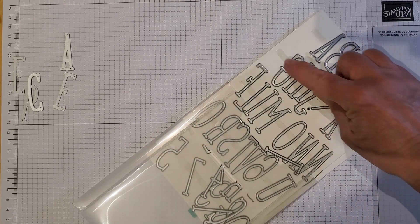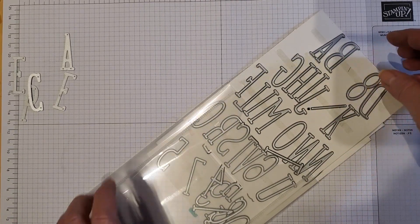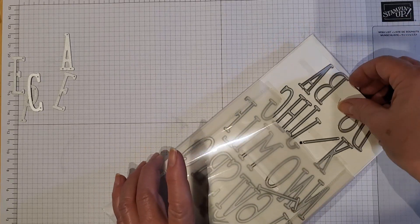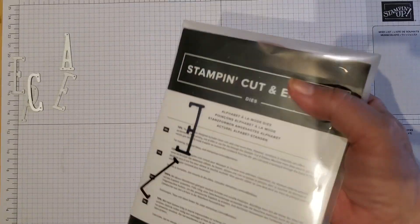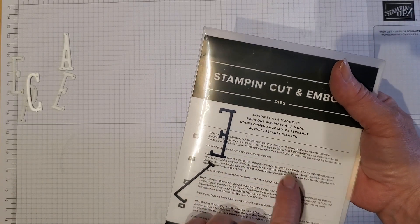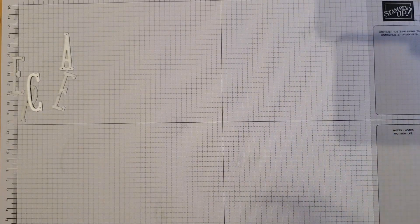I try to keep them on the little sticky strip that's here so I can find my letters quicker, but obviously some of them have fallen off. But all right, so I'm going to be using those, the Alphabet a la mode dies for this card. Let's set that aside.